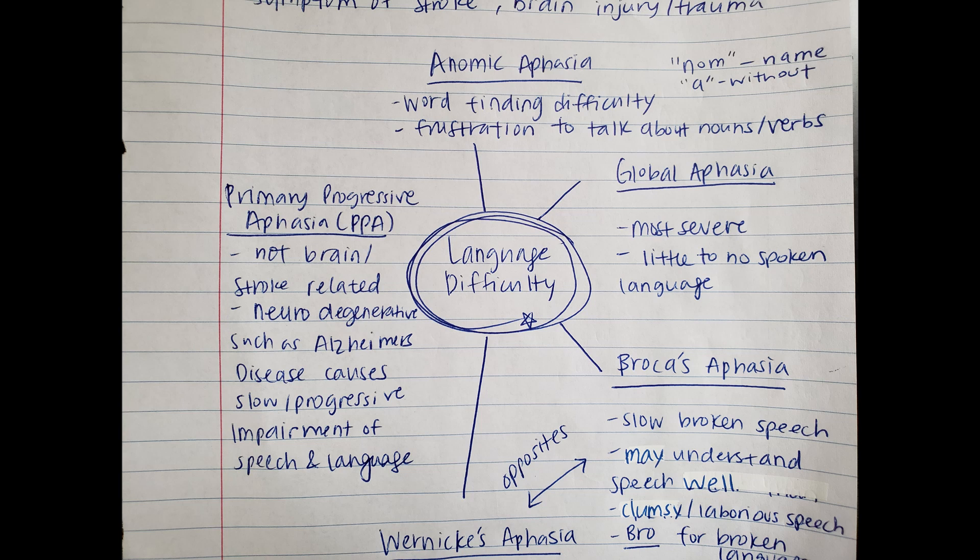The way I remember anomic aphasia is the word 'nom,' like N-O-M. I think of 'name' and 'a' to mean without — so it's like you're having a hard time giving things a name, or without a name. That must be really frustrating. So anomic aphasia equals word-finding difficulty.